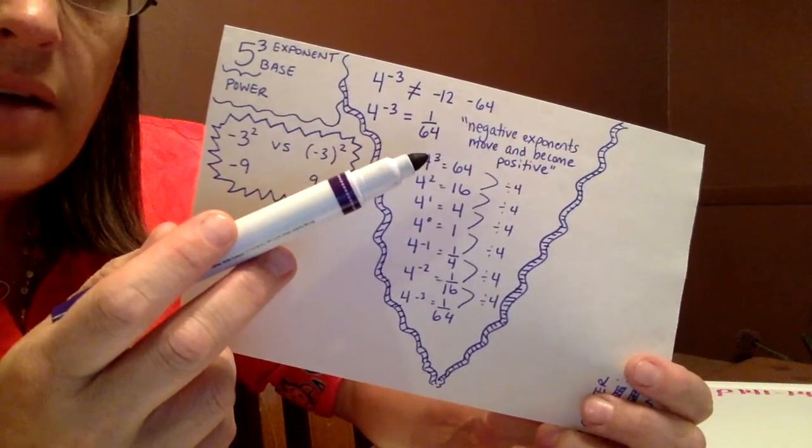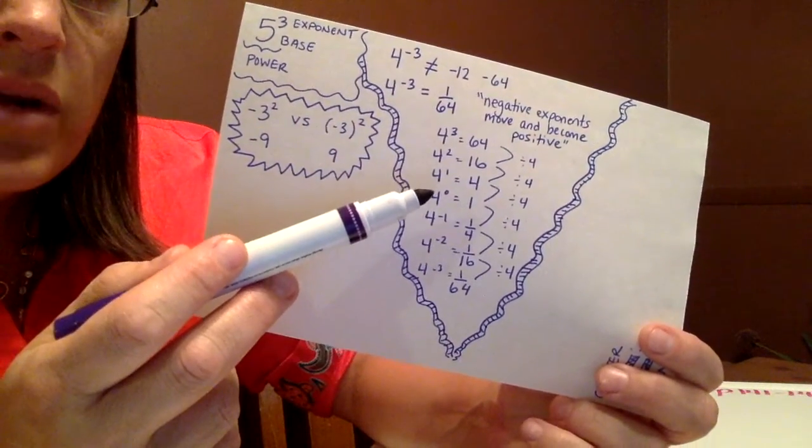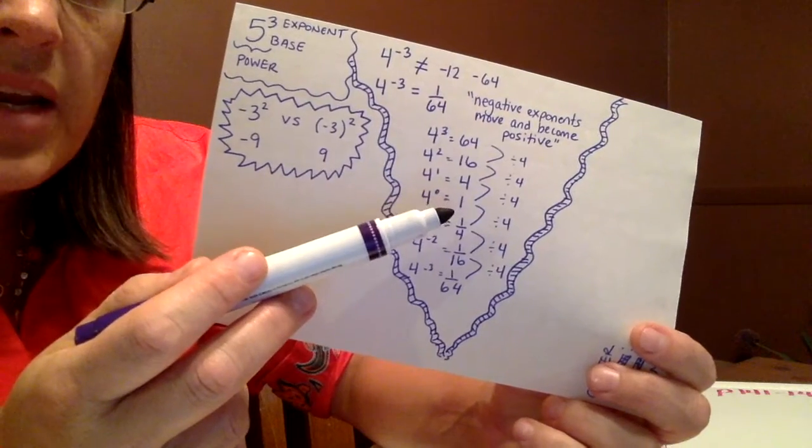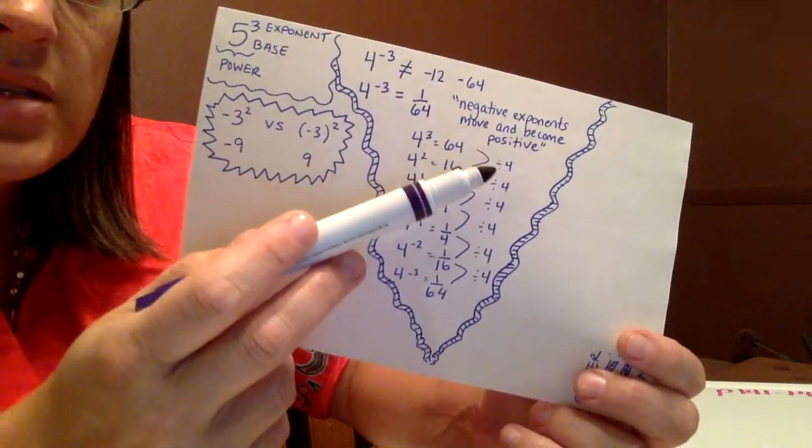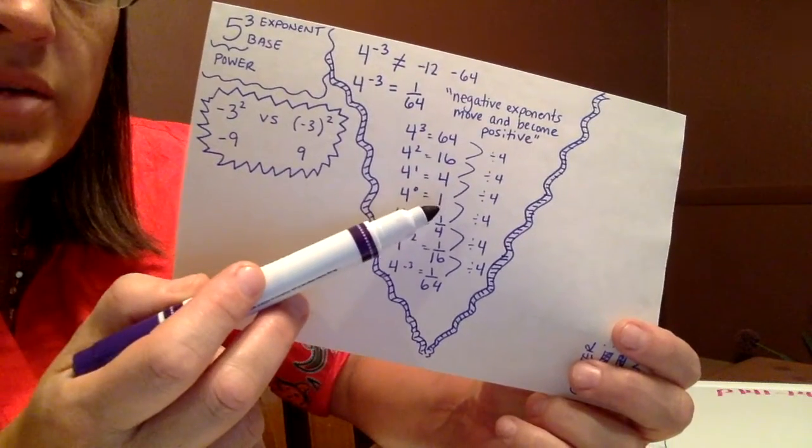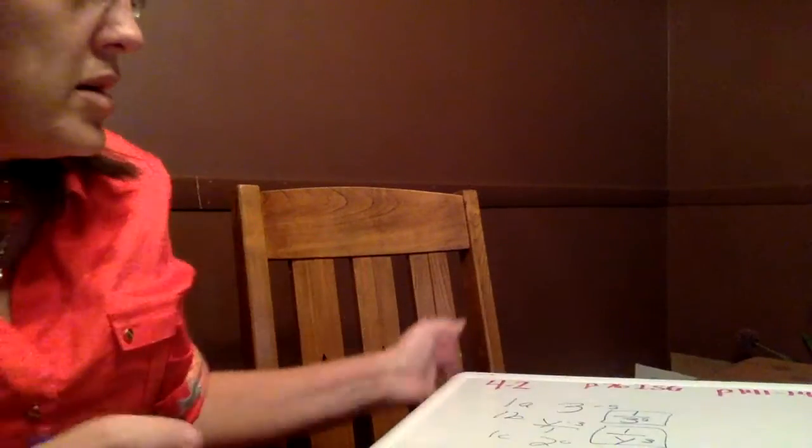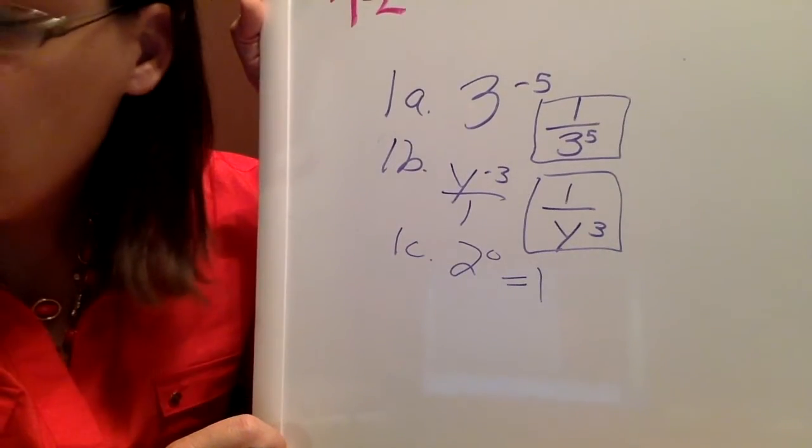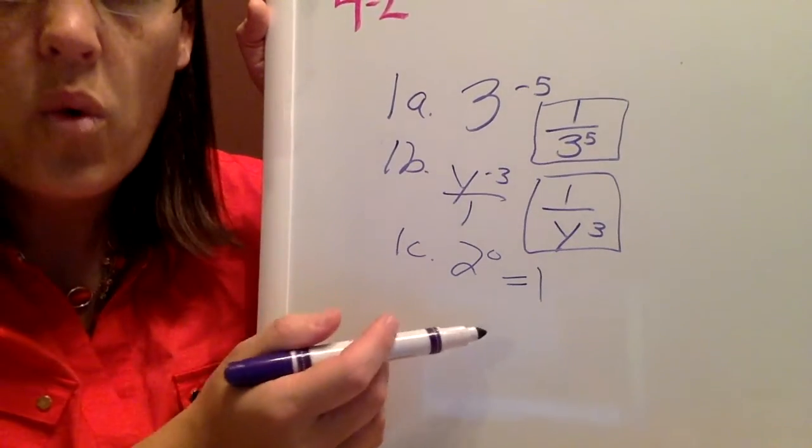Just show the pattern of the exponents. And when you get to 4 to the 0 power, it equals 1 because the pattern is to divide by 4 each time. And 4 divided by 4 is 1, not 0. So the answer to 1c on page 142 is 1.